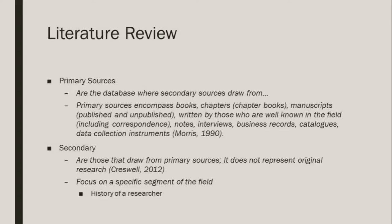There are three types of sources in a literature review: primary sources, secondary sources, and tertiary sources. Primary sources are the database where secondary sources draw from. They include books, chapter books, and manuscripts — both published and unpublished — written by those that are well known in the field. Also their notes, interviews, business records, catalogs, data collection instruments, etc.